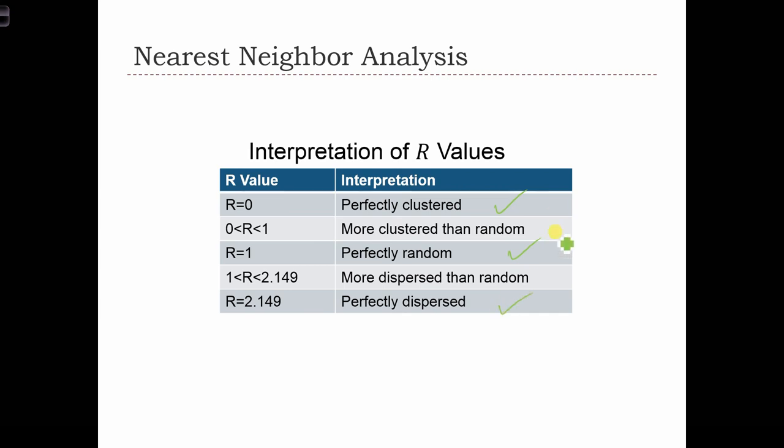For values in between, if it's between 0 and 1, the data are more clustered than random. If it's between 1 and 2.149, it's more uniform or dispersed than random.